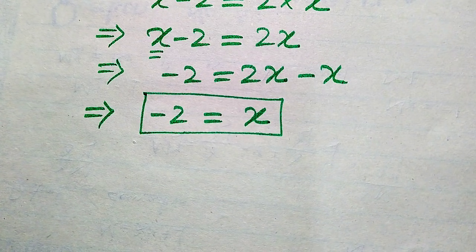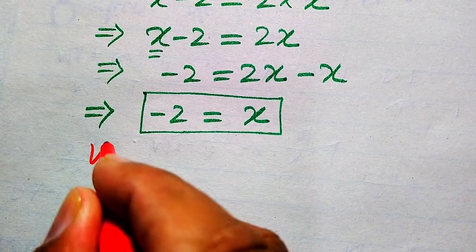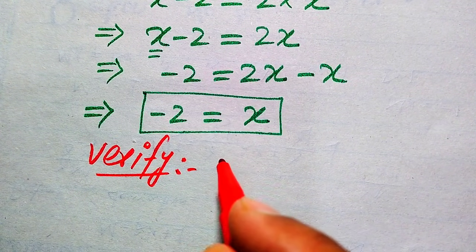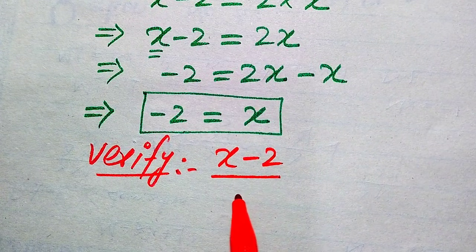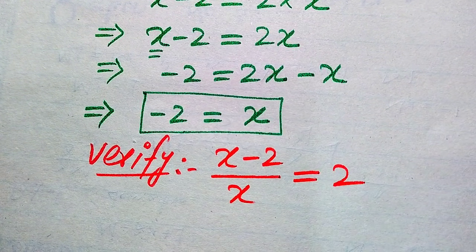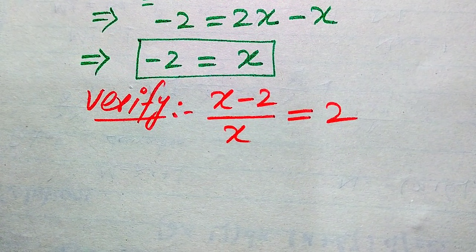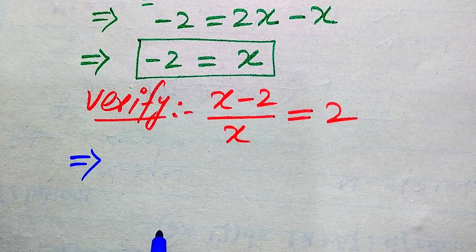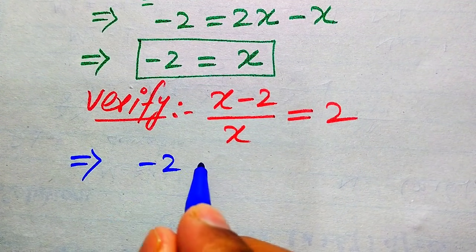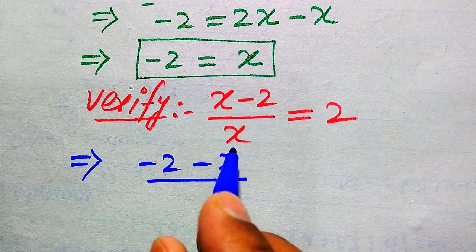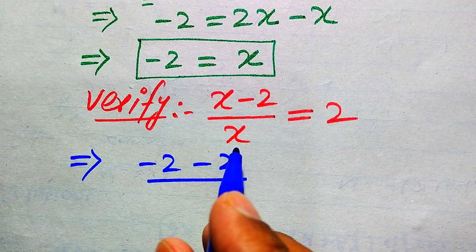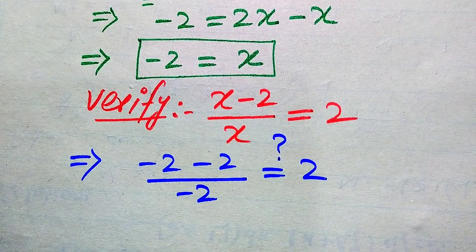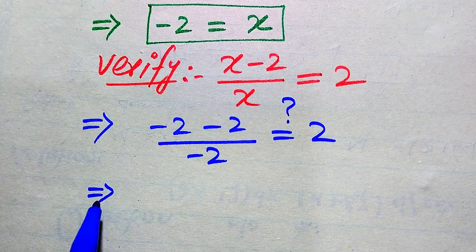Now we verify whether this root is a solution or an extraneous root. We copy down the given equation: (X minus 2) divided by X equals 2, and substitute X equals minus 2 into the left-hand side. It becomes (minus 2 minus 2) divided by minus 2, and we check whether this equals 2.